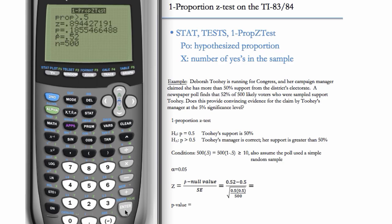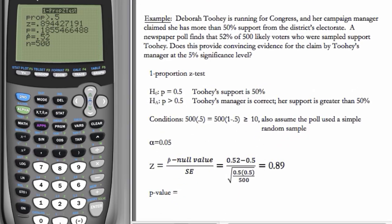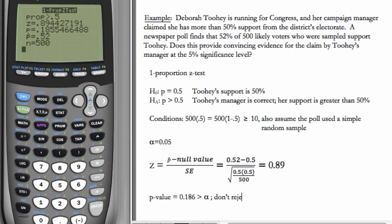And we get our Z statistic of 0.89. So we can fill that in. And our p-value of 0.186. This is definitely greater than alpha. So we don't reject H sub 0. And we have no evidence that her true support is greater than 50%. We have no evidence that her manager was correct.